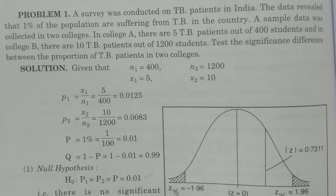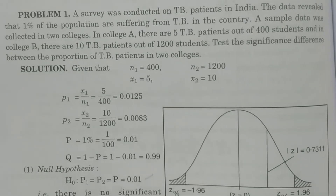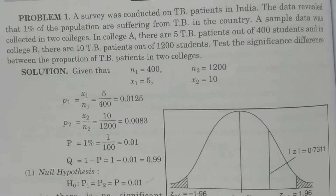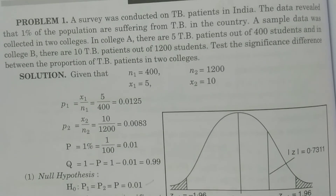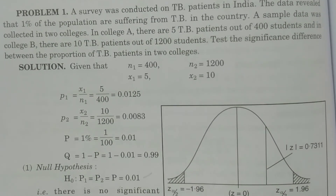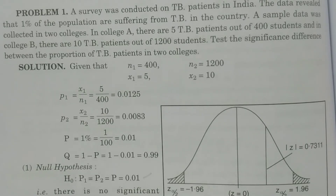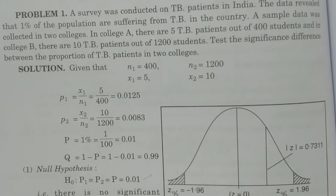Null hypothesis: capital P1 is equal to capital P2 is equal to capital P. There is no significant difference in the proportion of TB patients in the 2 colleges. Alternative hypothesis: there is a significant difference between the proportion of TB patients in the 2 colleges.